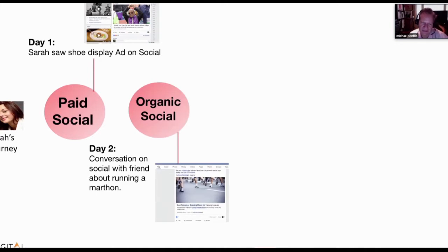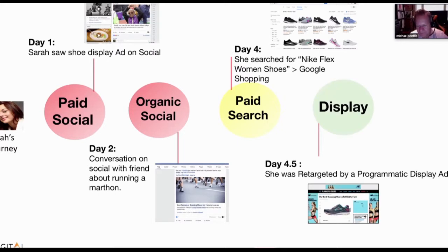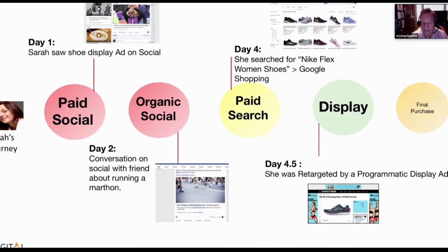On day two, she was having an organic social conversation about running a marathon with a friend, and now she's really starting to think about getting shoes. On day four, she searched for Nike Flex women's shoes through Google's shopping portal. Later that day, Google triggered a retargeted programmatic display ad after she'd been looking at those shoes — and then she purchased. Notably, her path virtually ignored organic search entirely.